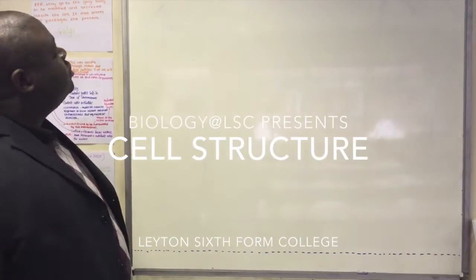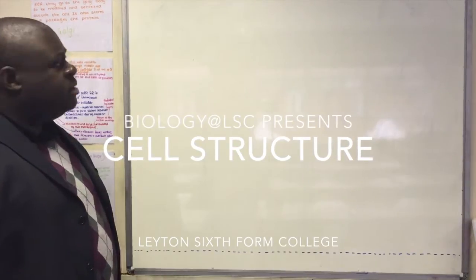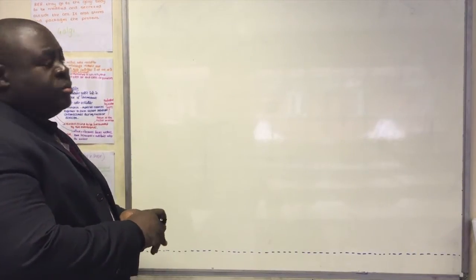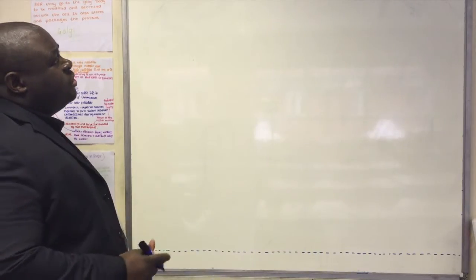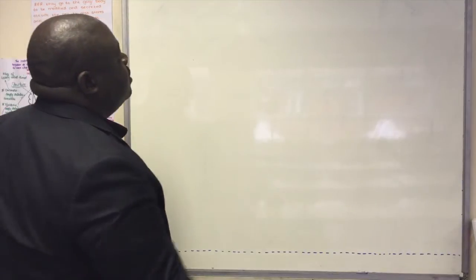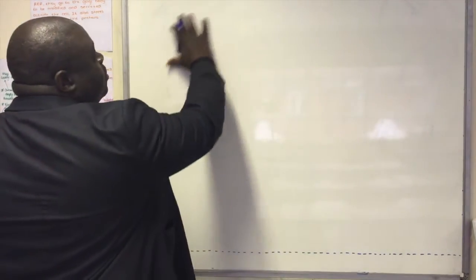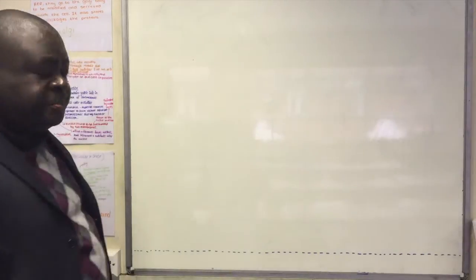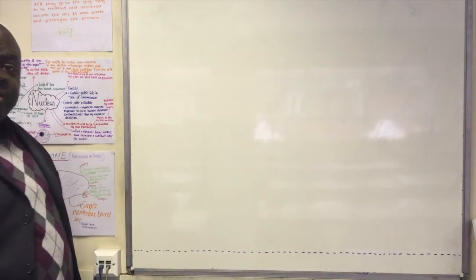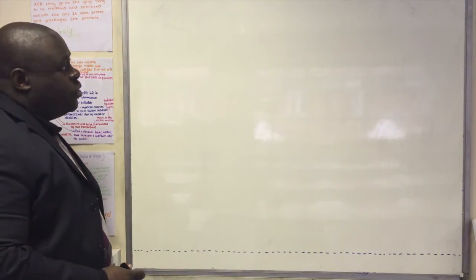I'm trying to summarize the topic on cell structure. I know we tend to have lots of problems with it, so I'll start by just writing a few words on this side, and then I'm going to draw the structure of the cell here. After that, we're going to assign the words to some structures within the cell. So let's just write a few words.